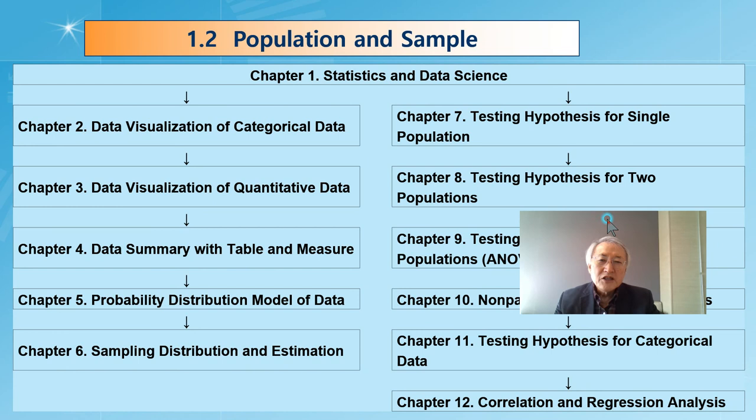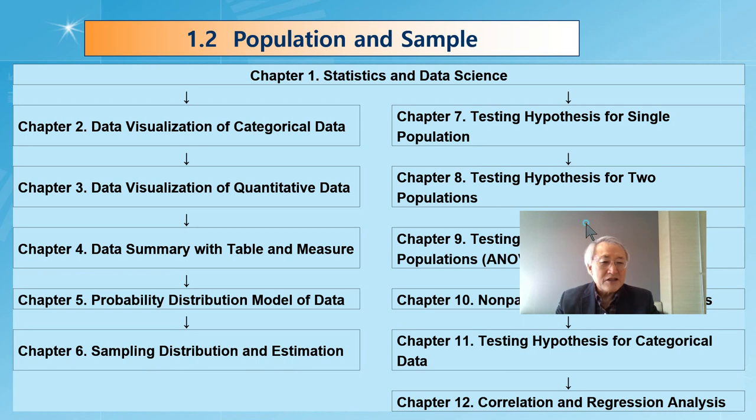In detail, this textbook from chapter 2 to 5 is related with data summary and visualization. We call this descriptive statistics. We describe both population and sample. But from chapter 6, we discuss the relationship between sample and population, and we discuss estimation, testing hypothesis, and some other topics.